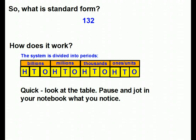So, what is standard form? We've already talked about that — standard form is how we normally write numbers. 1, 3, 2 is standard form for 132. Why is it called standard? Because everyone who uses numbers got together and decided to make a system that would work for everybody, so everything would be standardized.